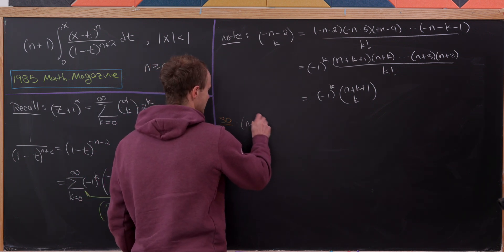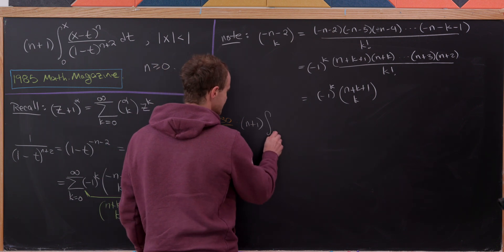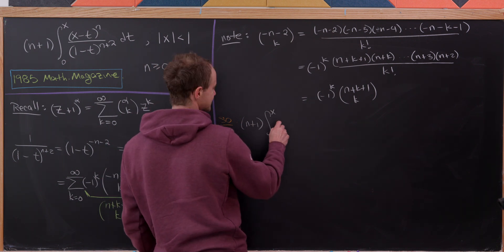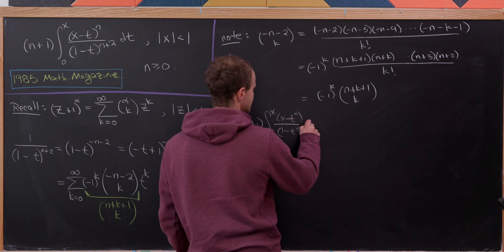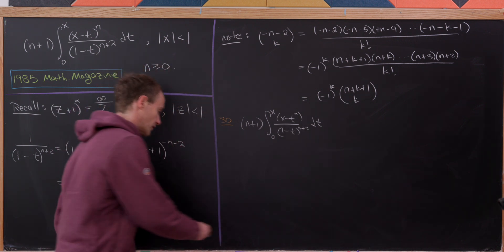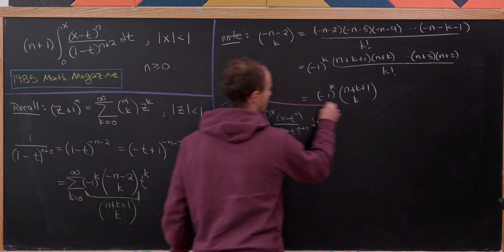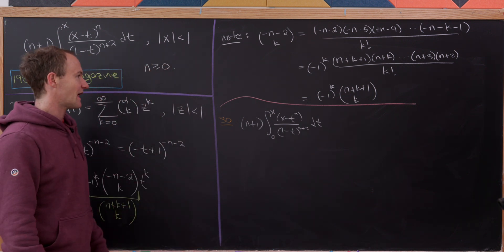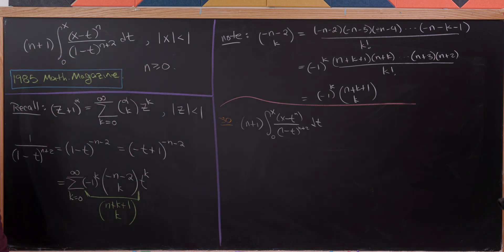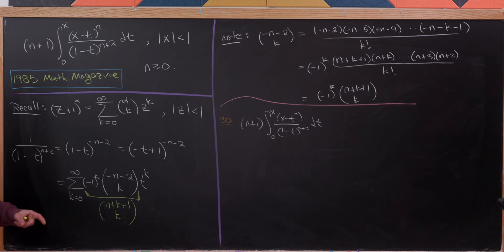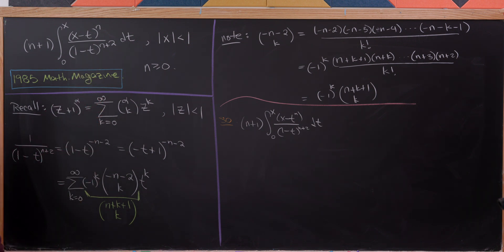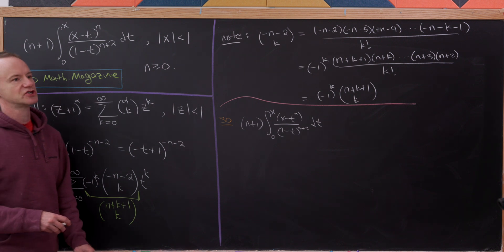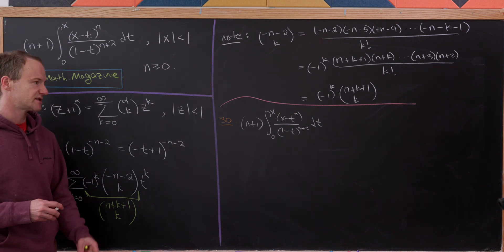We have n plus 1 times the integral from 0 to x of x minus t to the n over 1 minus t to the n plus 2 dt. Expanding the denominator as derived, we bring the integration inside the summation — this is allowed because t less than 1 gives absolute convergence.